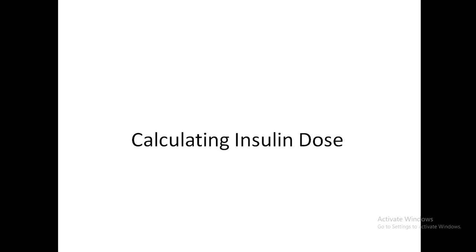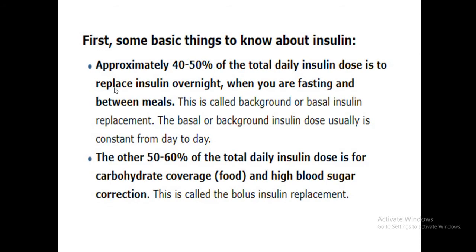Coming to calculating insulin dose, the basic things: 40 to 50% of the total daily insulin dose is to replace insulin overnight when you are fasting and between meals. This is called the background or basal insulin replacement. That is why we give 50% of total insulin as basal. The other 50 to 60% is for carbohydrate coverage and blood sugar correction — this is called the bolus insulin.